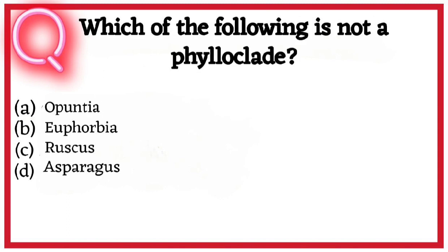Question eleven. Which of the following is not a phylloclade? A. Opuntia, B. Euphorbia, C. Ruscus, D. Asparagus. So correct answer hai option D. Asparagus.